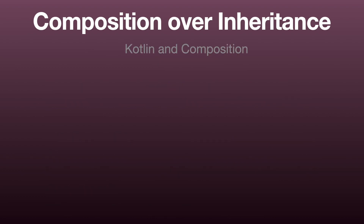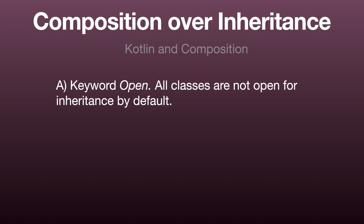Kotlin is a great language for composition — it basically leads us there by default. The first feature is the keyword 'open' that we saw previously: all classes are final by default, meaning closed for inheritance. In order to subclass them, we need to define them as 'open', which is a first good barrier helping developers make a conscious decision about inheritance. In Java, you could extend all classes unless you declare them as final. Kotlin reverses that and says you can extend nothing unless you declare it as open — that's a cool design choice.